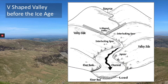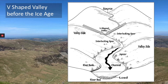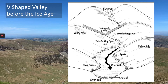Before the ice age it wouldn't have been a U-shaped valley — it would have been a V-shaped valley. It would have had the source of the river up in the mountains, and this river or stream would wind its way down the valley, passing the interlocking spurs into the main river channel. These interlocking spurs are here because the river wasn't strong enough to erode through the rock, so it needed to find a way around, snaking its way around these spurs.